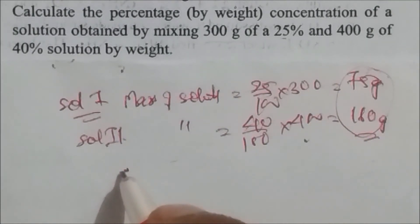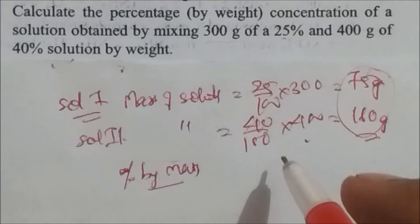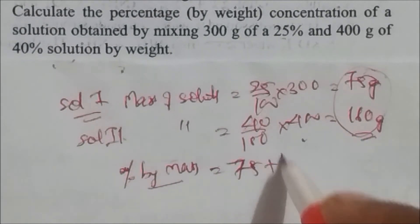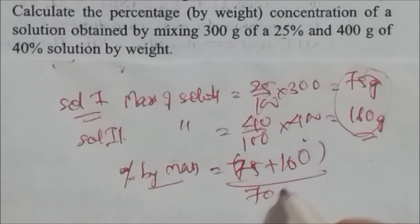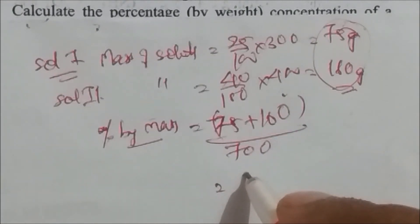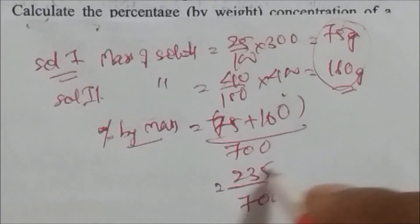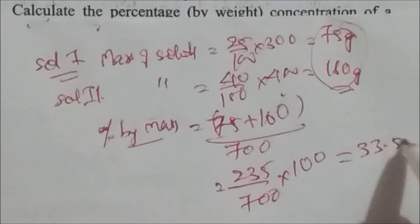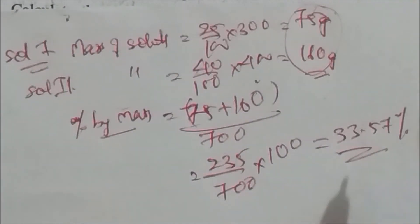Total solute = 75 + 160 = 235 grams. Total solution = 300 + 400 = 700 grams. Percentage by mass = (235 / 700) × 100 = 33.57%. This is the answer to the question.